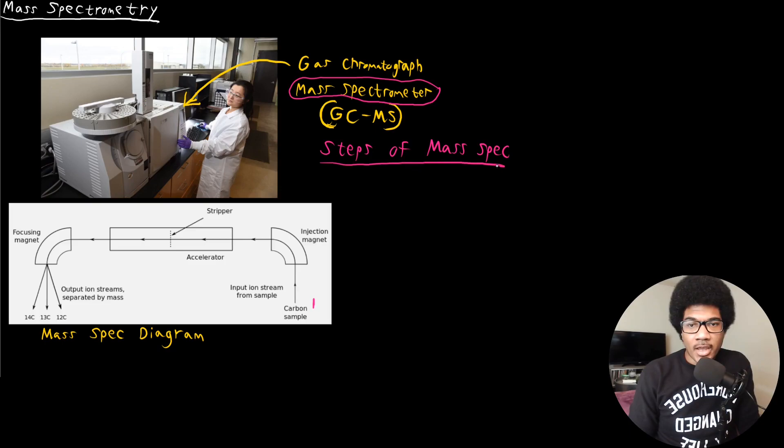So let's go through the steps of the mass spec. The first step here is that your sample is ionized. So the sample is ionized.